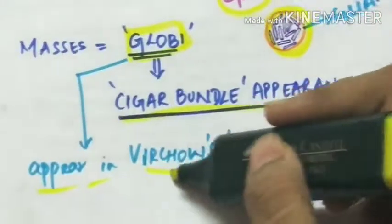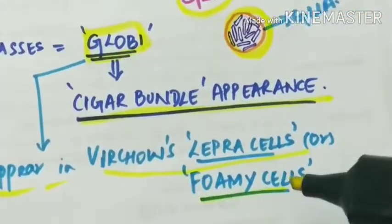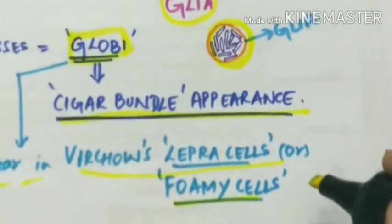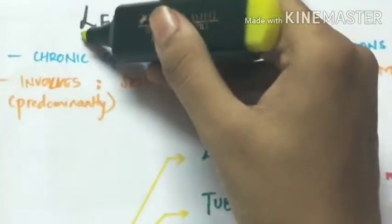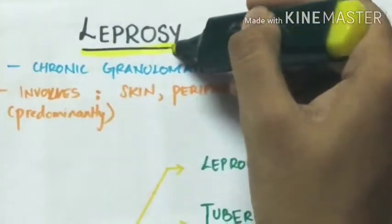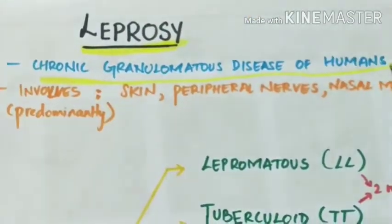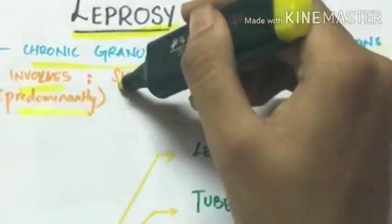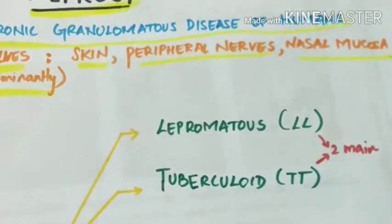They appear in Virchow's leprae cells or foamy cells, which are large undifferentiated histiocytes. Leprosy is a chronic granulomatous disease of humans that predominantly involves the skin, peripheral nerves, and nasal mucosa.